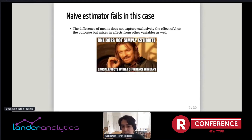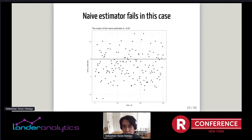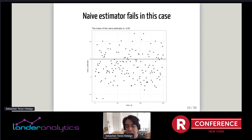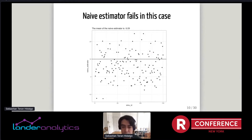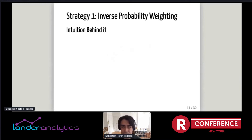Unfortunately, the naive estimator fails because we don't have randomized data. The difference in means doesn't capture exclusively the effect of the treatment variable — it mixes in effects from other variables. Running the simulation 200 times, the naive estimator averages around 6.09, which is quite far from the true causal effect of 10 shown by the black vertical line.